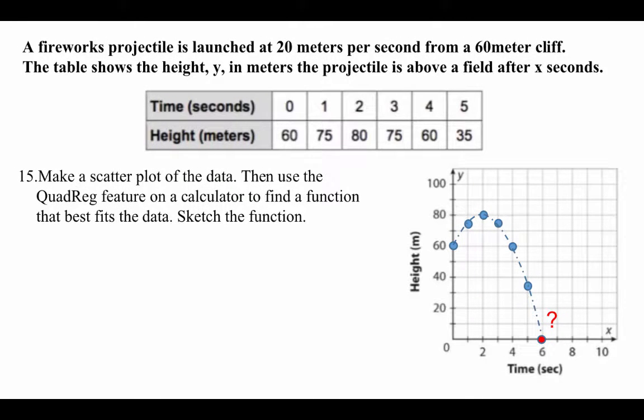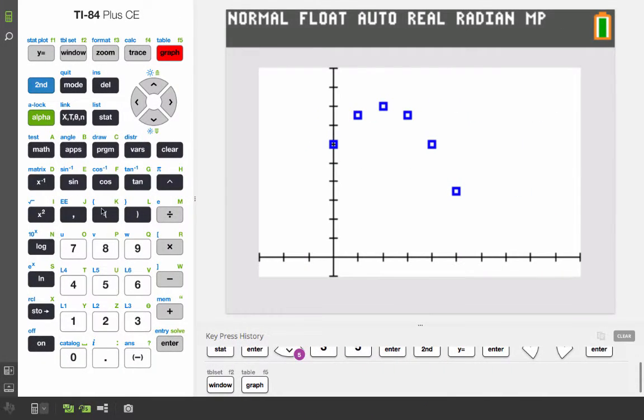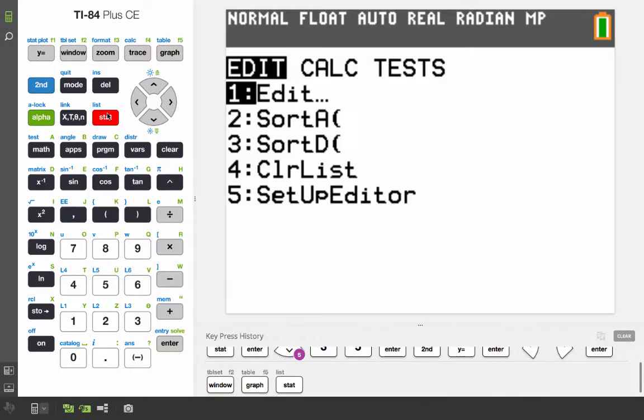But we could do this by hand. But the function that we're looking for is quadreg. So we're looking for this right here. To use that, we need to go to stat, right here. Stat.